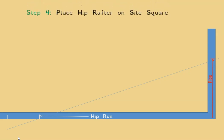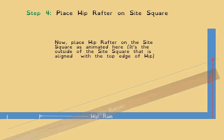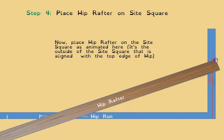Now we place the hip rafter on the site square. The line drawn here forms the hypotenuse of the right angle triangle. The back of the hip lines up with this hypotenuse line — I usually line up the very corner of the hip so I have something to hook my tape on later. If needed, screw them in place so nothing moves. Note: the other end has to align to the hip run point, not the tail run point — a common mistake apprentices make.